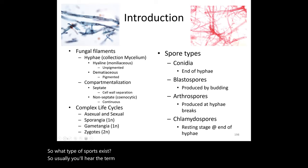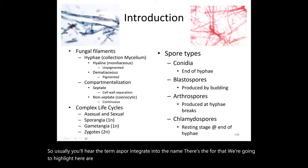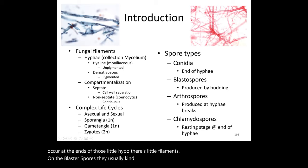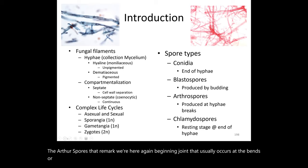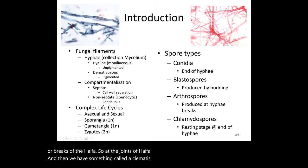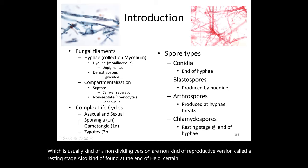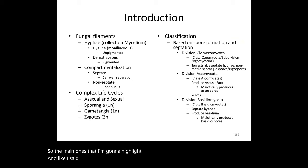To summarize spore terminology: conidiospores form at hyphal tips; blastospores form by budding off the cells; arthrospores form at hyphal joints or breaks; and chlamydospores are a resting, non-reproductive stage. These four are the main spore types. Classification is based on what spores they form and some features of their hyphae, including septation.